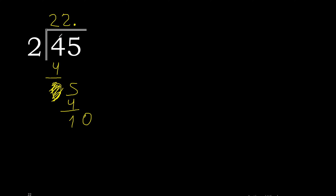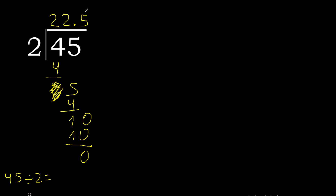2 multiplied by 6 is 12 — excessive. 2 multiplied by 5 is 10. Subtract — 0. Therefore finish. Therefore 45 divided by 2 is 22.5.